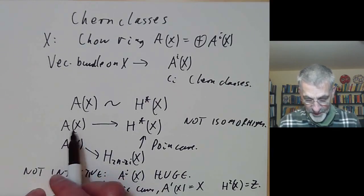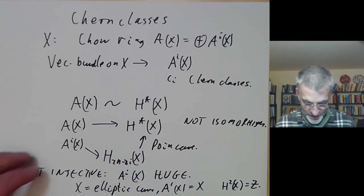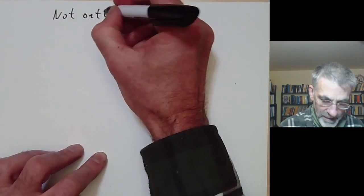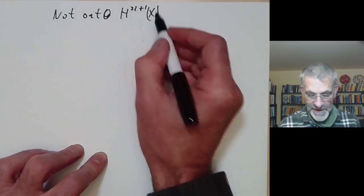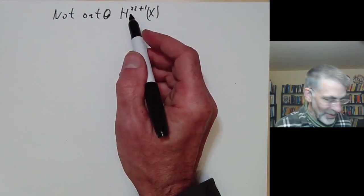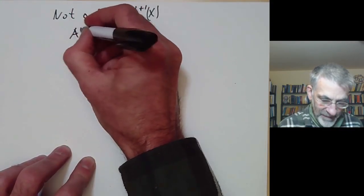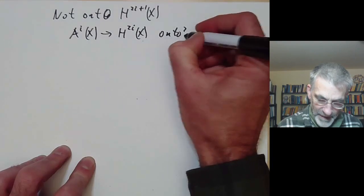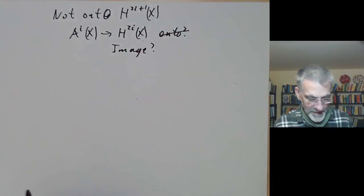So the Chow ring can often be vastly bigger than the cohomology ring. One can also ask if the map is surjective. Well, it's obviously not surjective onto H^{2i+1} of X if this is non-empty, because there's nothing in the Chow ring that can map to odd-dimensional cohomology. One can ask whether the map from A^i of X to H^{2i} of X is onto — in general it's not. So more precisely, we should ask what the image is, and this turns out to be a very difficult and subtle question.